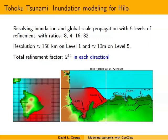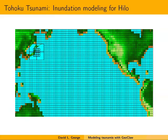That turns out to be, on the coarsest level, grid cells of about 160 kilometers squared. At level five we get 10-meter grid cells—a total refinement factor of 2 to the 14th in each direction. By telescoping in this way, you can achieve a huge amount of refinement.